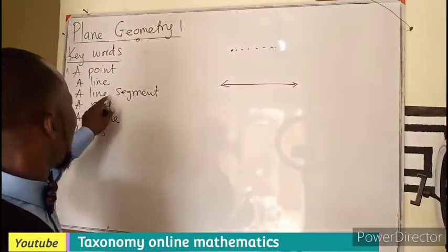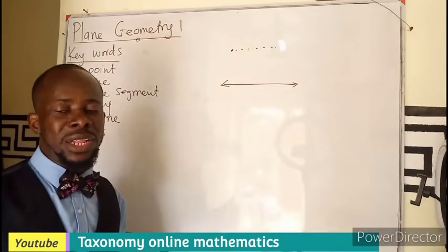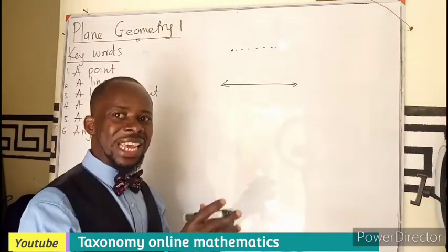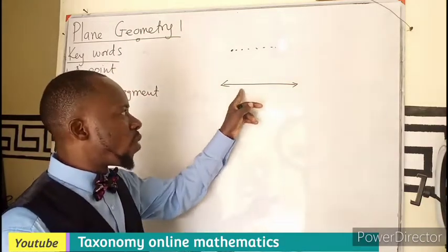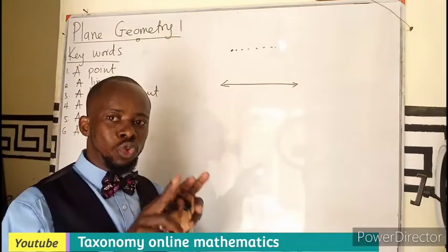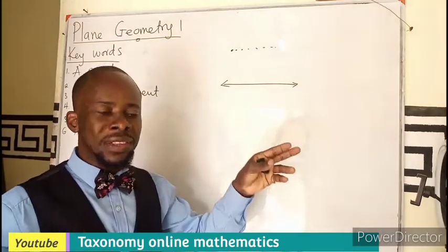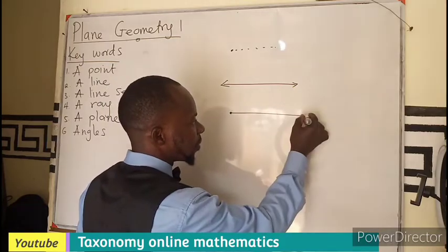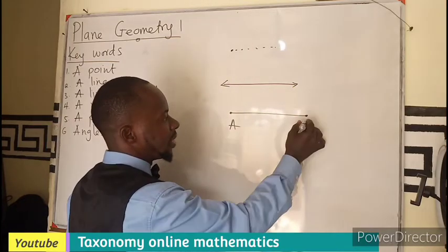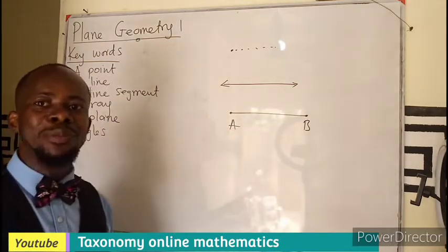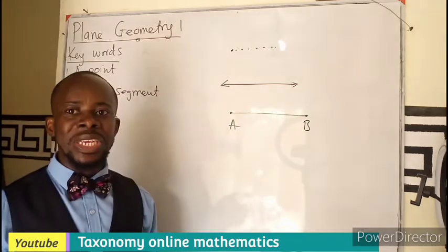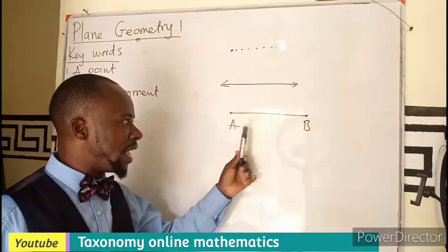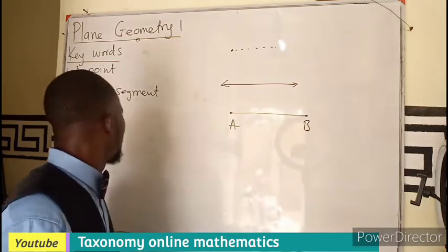Then we have a line segment. If we are talking of a line segment, it's also a set of points in a line which have two distinct endpoints. So if I have the end here, I can call the line segment AB, because I can measure this and know the actual length — it goes from here to here and ends there.